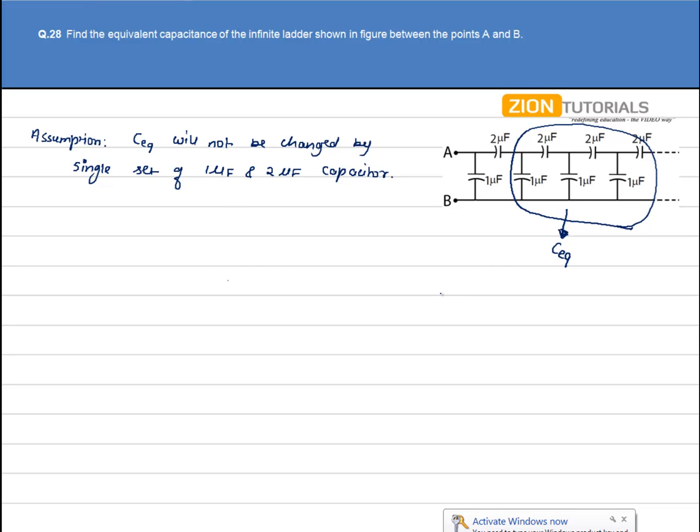So this circuit can be reformed as: this is my point A, this is my point B, 1 microfarad, my 2 microfarad capacitor, and another capacitor that is C equivalent. And here is my circuit.